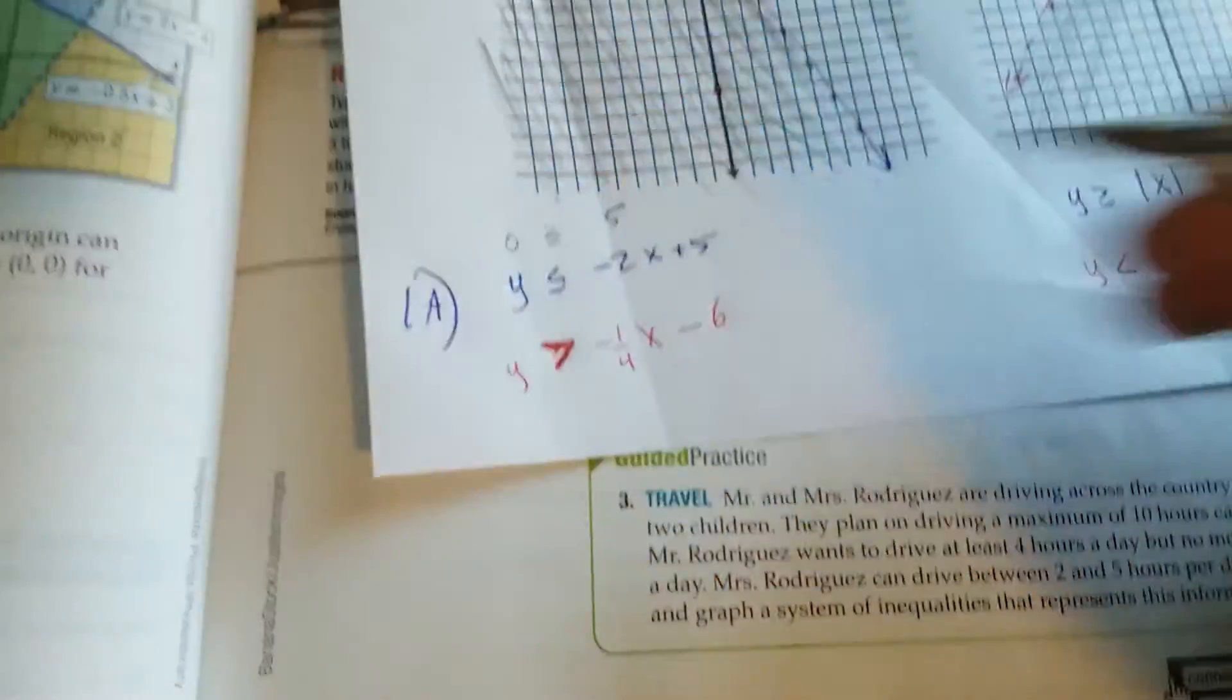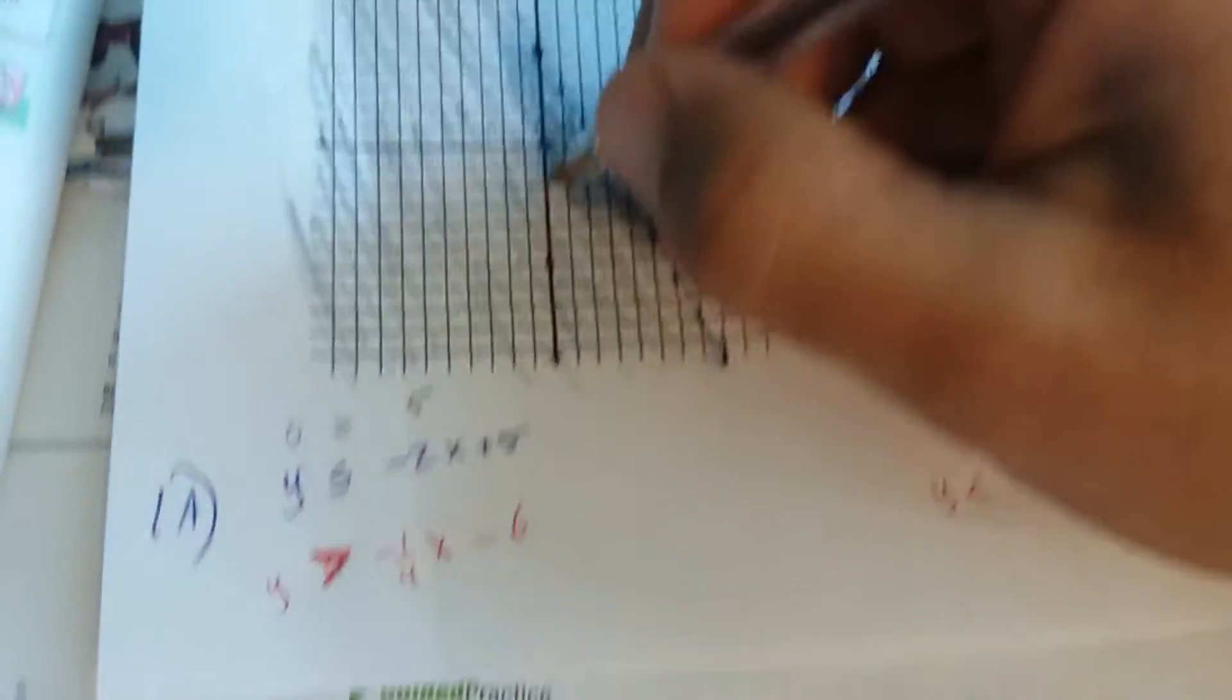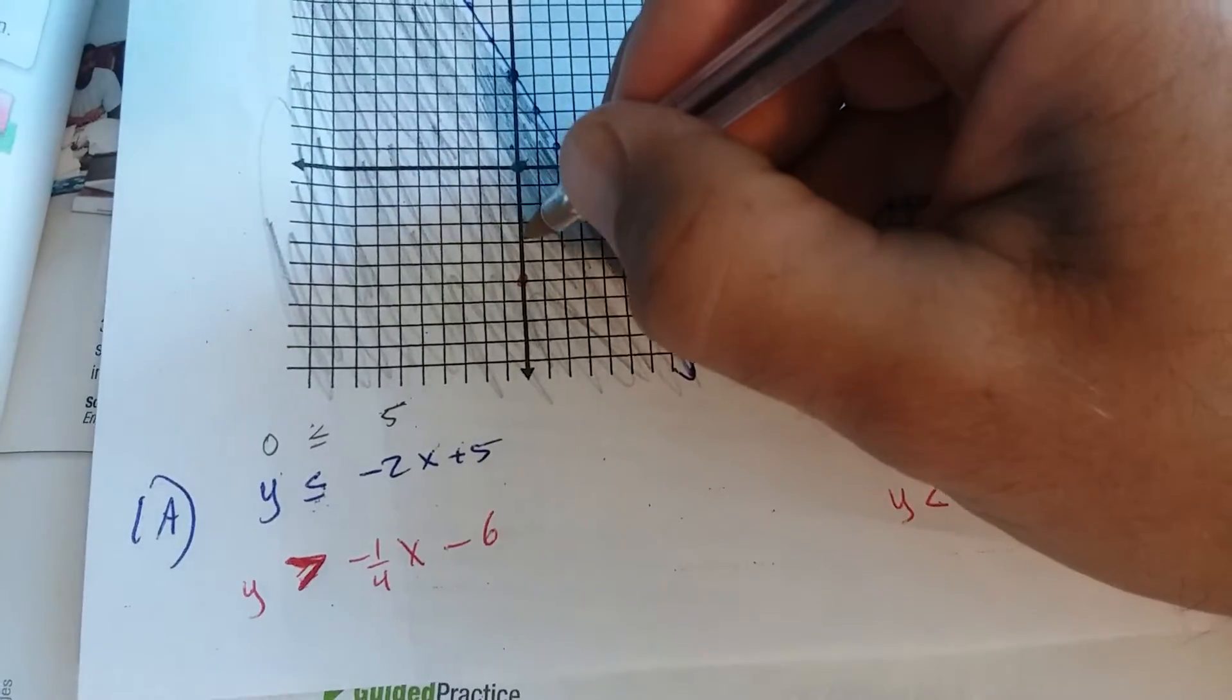Notice there's not an equal bar underneath this. So let's go down 6. 1, 2, 3, 4, 5, 6.